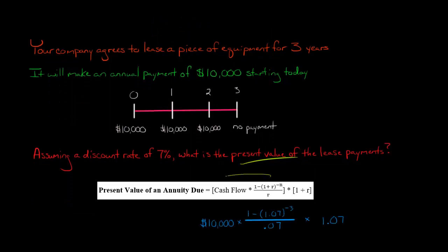We'll use our formula and plug in numbers. Our periodic cash flow is $10,000. We plug in $10,000 for the cash flow, then 1 minus 1.07 raised to the negative third power (1.07 is 1 plus 0.07, the 7% discount rate, and negative third because there are three periods in the three-year lease), divided by the discount rate of 0.07.